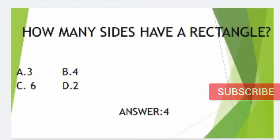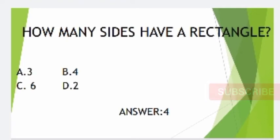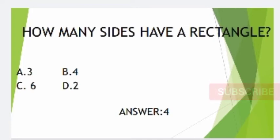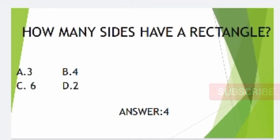How many sides does a rectangle have? Let's look at the rectangle and apply the options. Option A: 3, Option B: 4, Option C: 6, Option D: 2. The answer is Option B, 4.